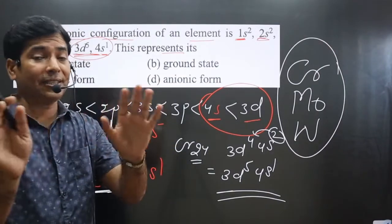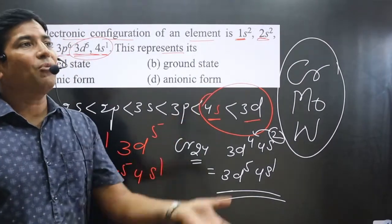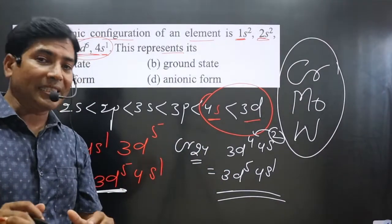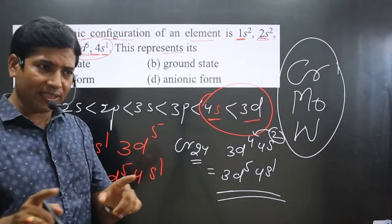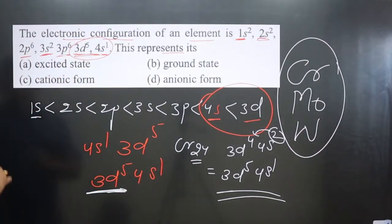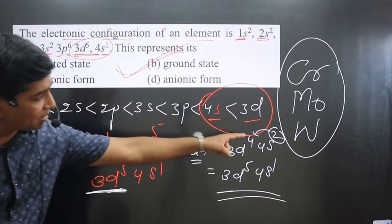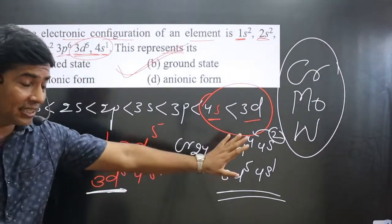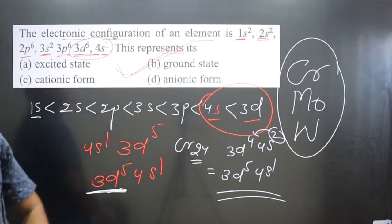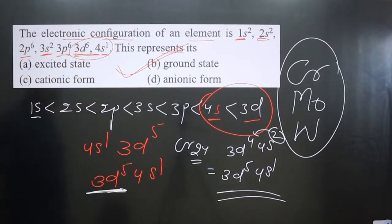If it were in the excited state, it would never be in the stable state, because in the excited state the element has energy, making it more reactive and less stable. If an element is in the stable state, it should be in the ground state. So this configuration represents the ground state. Option B is correct — this arrangement takes place automatically and spontaneously only to achieve the stable state.